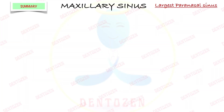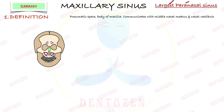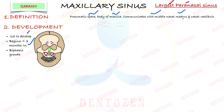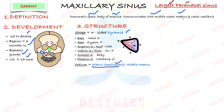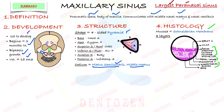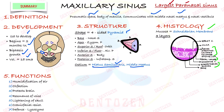Let's summarize. Maxillary sinus is the largest paranasal sinus. Definition: it is a pneumatic space in the body of maxilla, communicating with the middle nasal meatus. Development: first paranasal sinus to develop, at two months of intrauterine life; biphasic growth — lateral then inferior — and in adults its volume is 15 cubic centimeters. Structure: four-sided pyramid with base towards the nasal side, apex towards the zygomatic process of maxilla, roof towards orbit, floor towards alveolar processes, anterior side towards facial surface, posterior towards infratemporal surface; opening in the Hiatus Semilunaris in the middle meatus. Histology: lined by the Schneiderian membrane, three layers — pseudostratified ciliated columnar epithelium, basal lamina, and sub-epithelial layer containing glands. Functions: humidification and warming, olfaction, brain protection, resonance, skull lightening, faciocranial resistance, and lysozyme production.